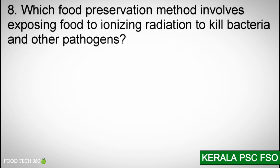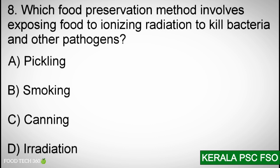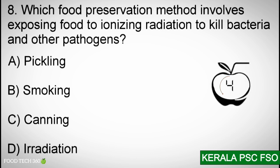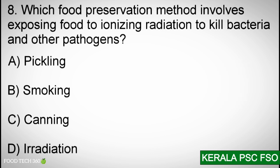Question number 8: Which food preservation method involves exposing food to ionizing irradiation to kill bacteria and other pathogens? A. Pickling, B. Smoking, C. Canning, D. Irradiation. Correct answer: D. Irradiation.